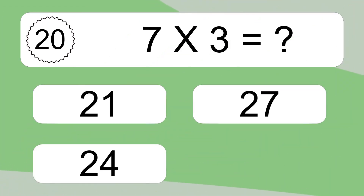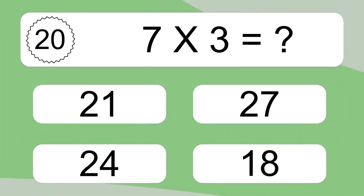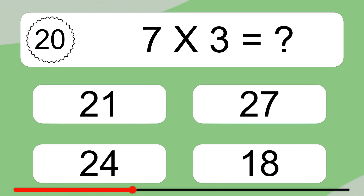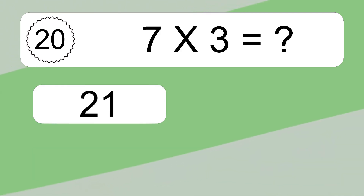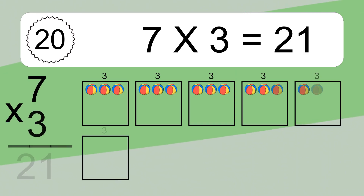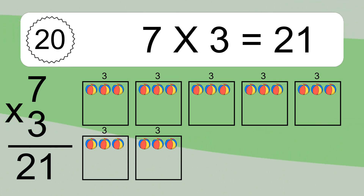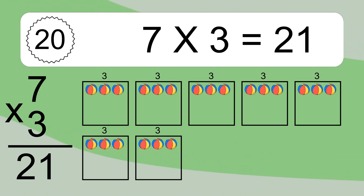7 times 3 equals 21. We have 7 boxes, and each box has 3 colorful balls inside. If you count all the balls in all the boxes together, you will have 7 times 3 balls. This equals 21 balls.